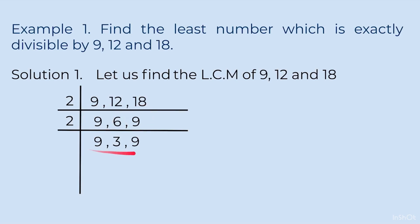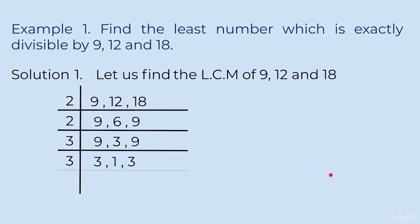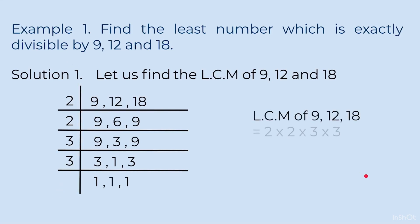Now none of them divide by 2, so we check the next prime number which is 3. All of them divide by 3, so we write 3 and we get 3, 1, 3. Again we divide by 3 and get 1, 1, 1. At the stage where we get all 1s we stop. For LCM we multiply these numbers. So LCM of 9, 12 and 18 is 2 × 2 × 3 × 3 = 36.